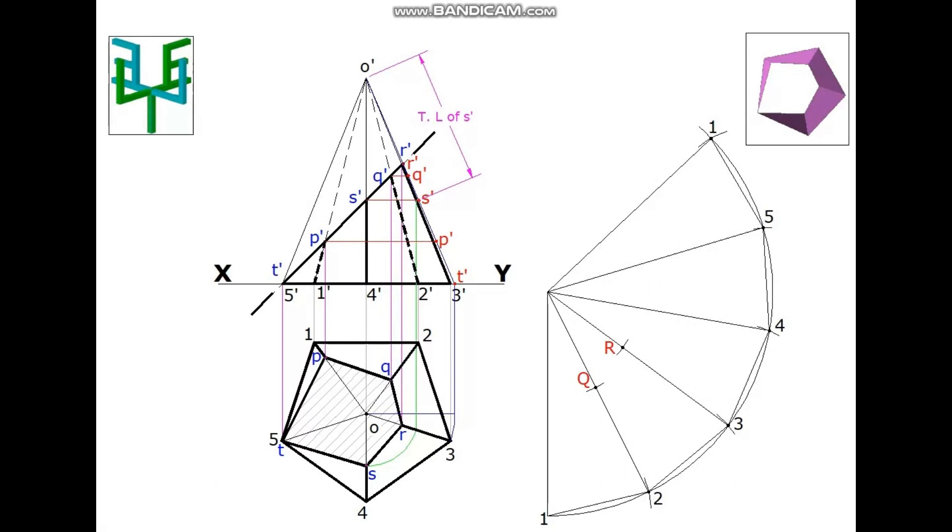Measure the true length of P', mark it on the slant edge 4 of the development part and name it as S. Measure the true length of P', mark it on the slant edge 1 of the development part on both the ends and name it as P.